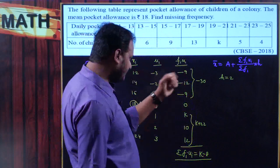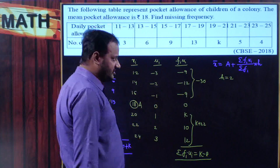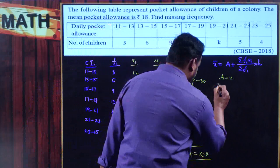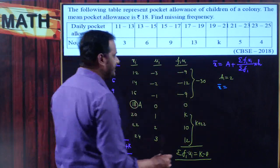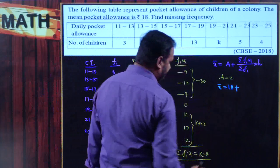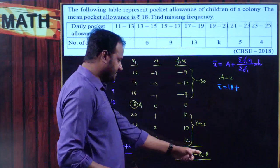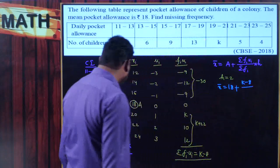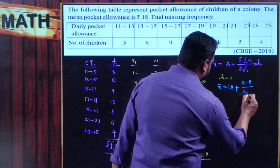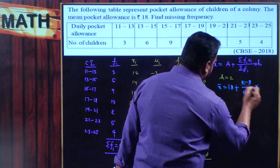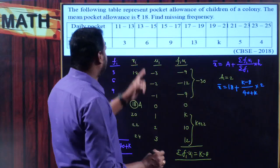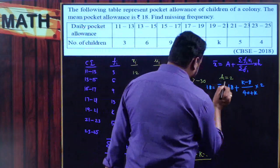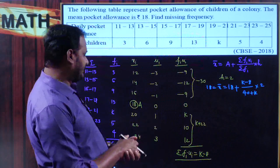Now substituting into the formula. h = 2, A = 18, Σfi·ui = k−8, Σfi = 40+k. So x̄ = 18 + (k−8)/(40+k) × 2. But the given arithmetic mean is also 18.